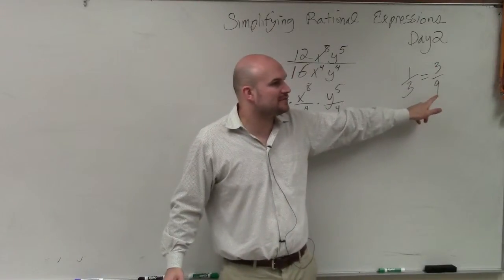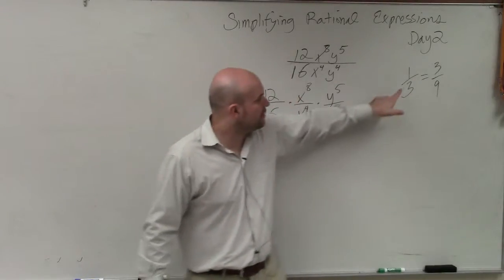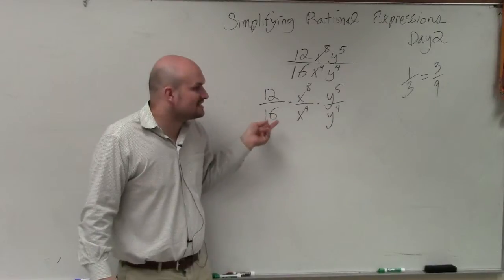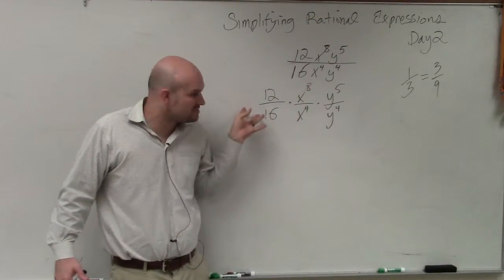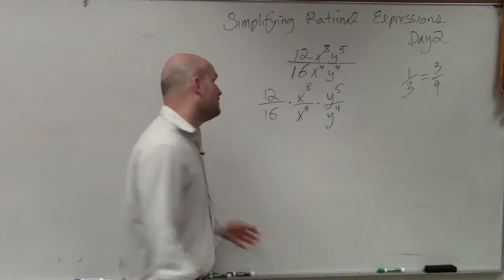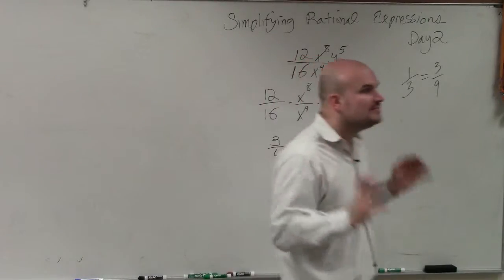If you divided the top and the bottom by 3, you would obtain 1/3, right? So notice 3 does not divide into 1, 9 does not divide into 3. So since 16 does not divide into 12, is there a common number that I can divide out of 12 over 16? 4. And if I divide a 4 out, I obtain 3/4. That's it, simplified.